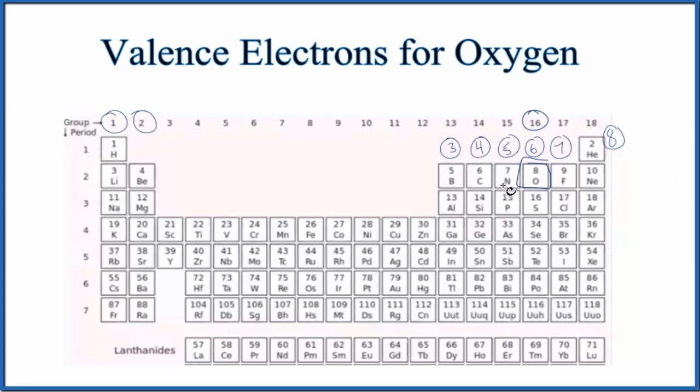So that's the first way to figure out the number of valence electrons for oxygen. The second way is to write the electron configuration.